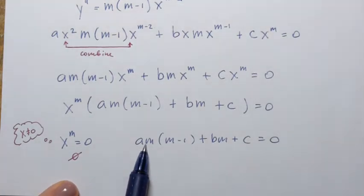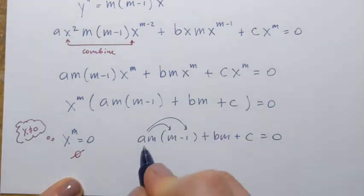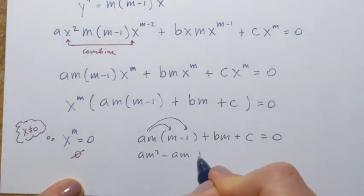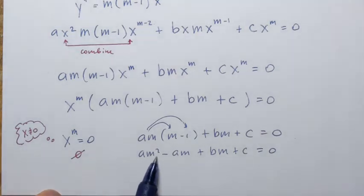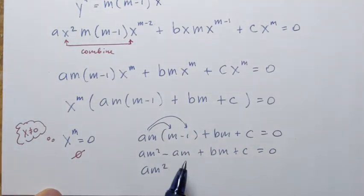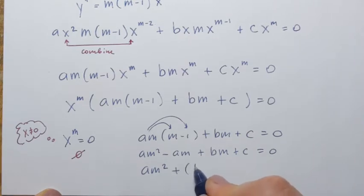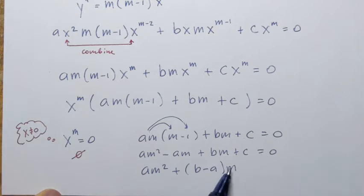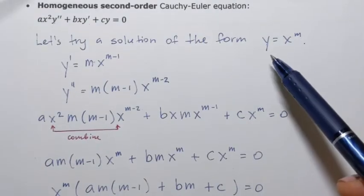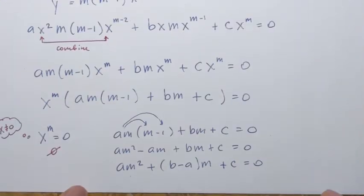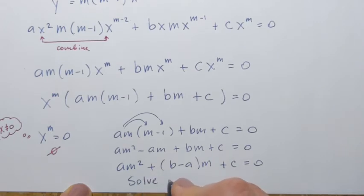Keep in mind that a, b, and c are the constants from the original equation — they'll be numbers in a specific example. To find values of m, we simplify by distributing: a m(m minus 1) plus b m plus c becomes a m squared plus (b minus a) m plus c equals 0. We can now recognize this as a quadratic equation in m. To find the values of m that satisfy it, we simply solve this quadratic equation.